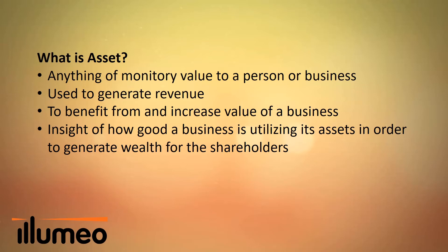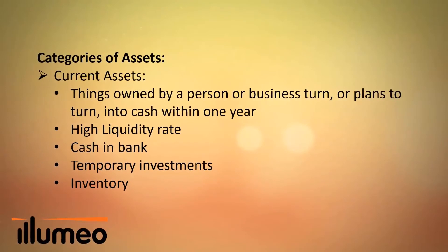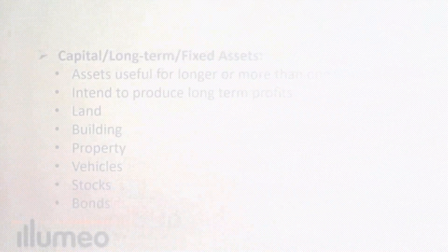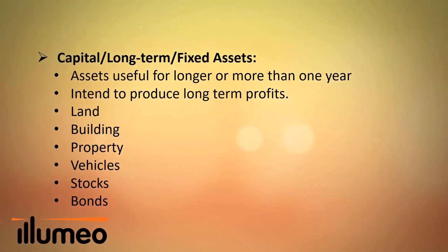Categories of assets: current assets are things owned by a person or business that are turned or planned to turn into cash within one year. They have a high liquidity rate. Examples include cash in bank, temporary investments, inventory, and capital.